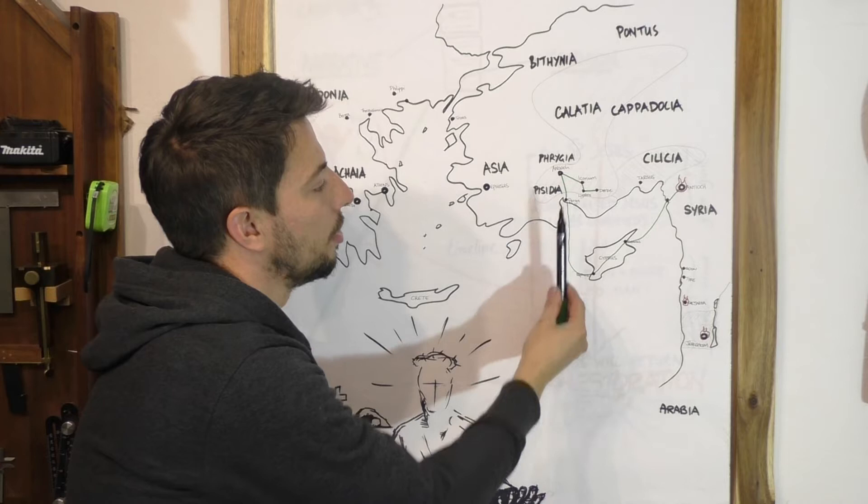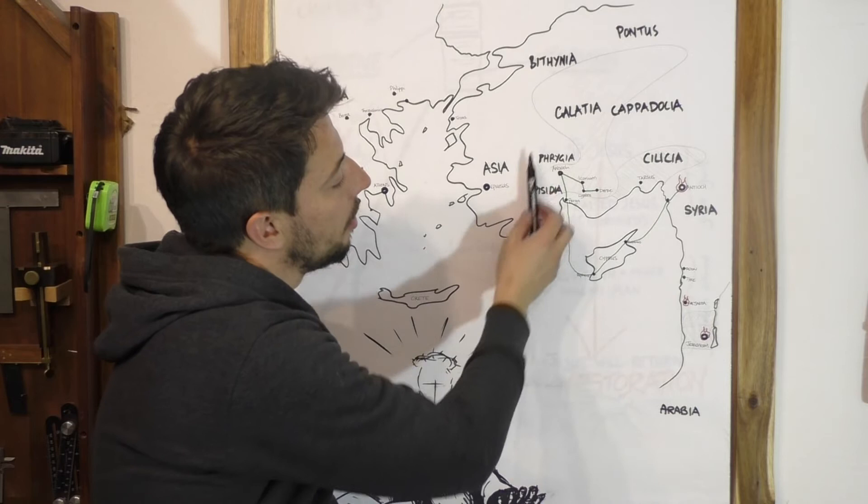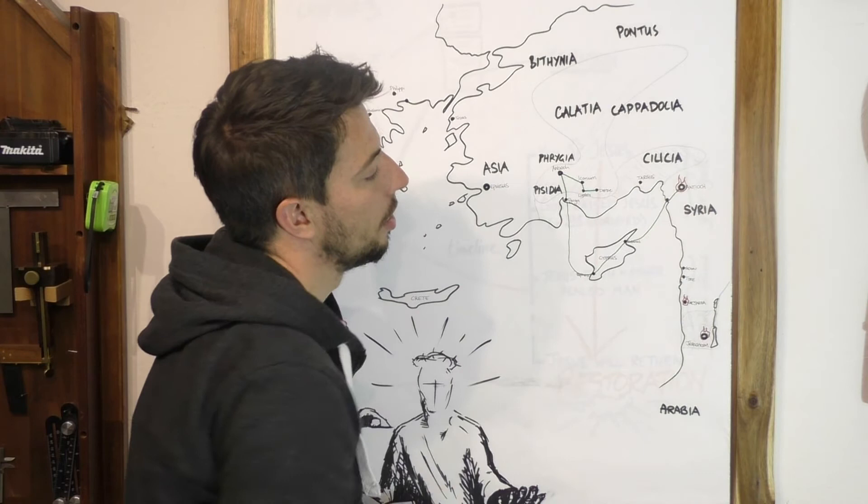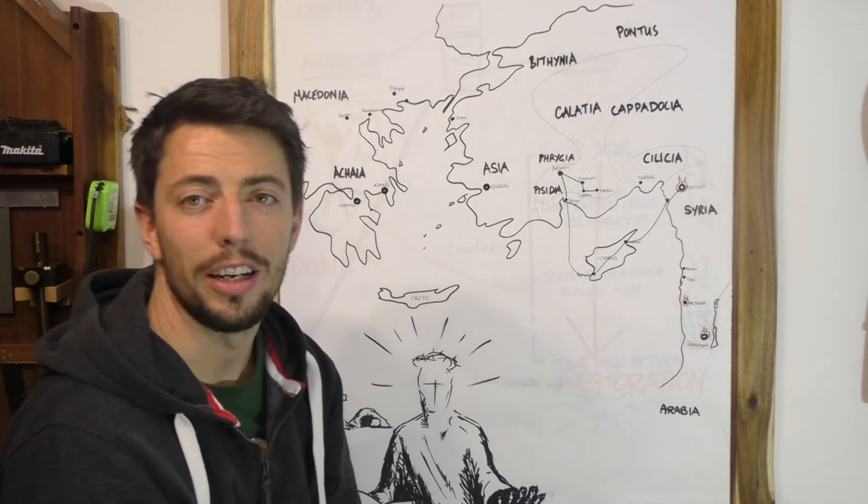From there Paul and Barnabas decide to move back through these towns: Lystra, Iconium, Antioch. They will do some brief preaching in Perga, they will move back through this area of Asia Minor to strengthen these churches before they again head back to Seleucia by boat and home base Antioch. That's the first journey, it took them roughly about two years.